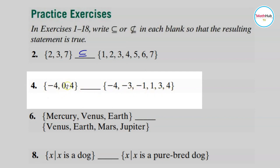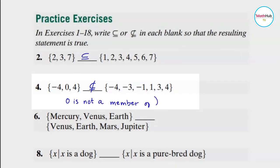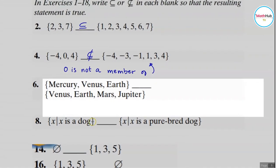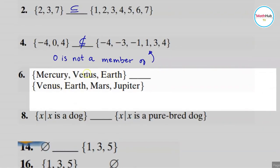For number four, are all elements in this set found in the other set? No, because zero is not in this set here. So we use the not-a-subset symbol because zero is not a member of that set. For number six, the set containing Mercury, Venus, Earth — is it a subset of the set containing Venus, Earth, Mars, and Jupiter?